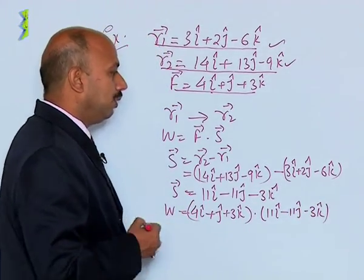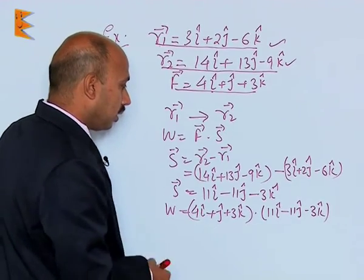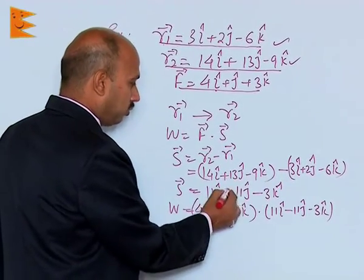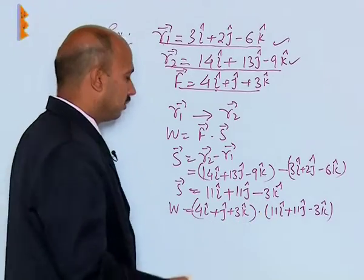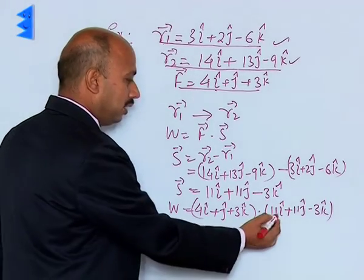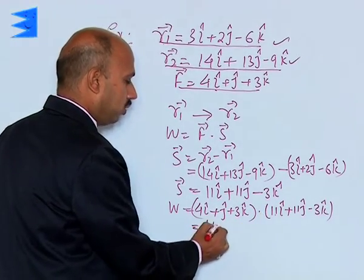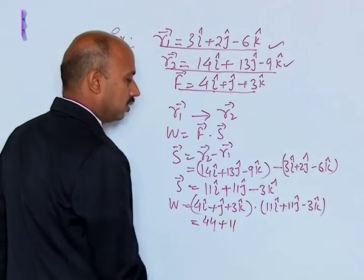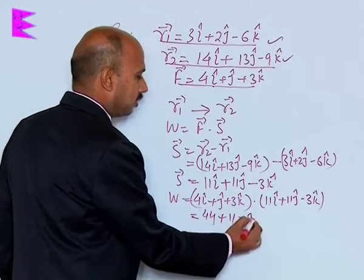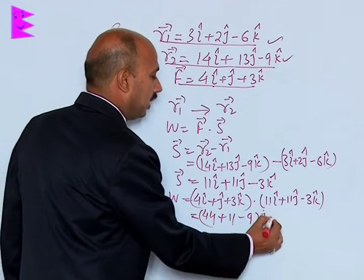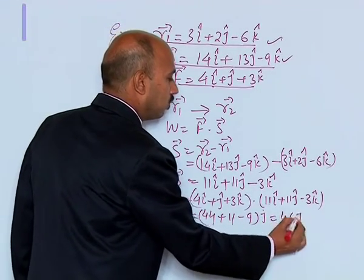So here this is your... sorry, this is plus, this is plus. So we can write here that is 44 plus 11 minus 9 joule, that is coming 46 joule.